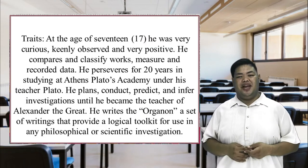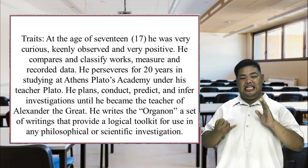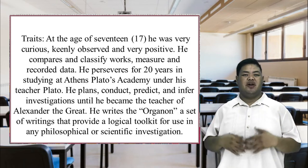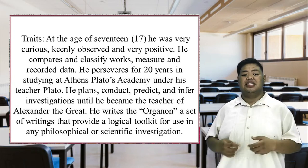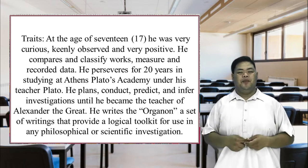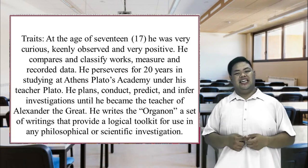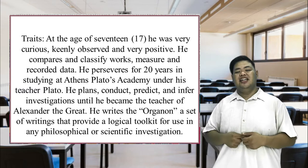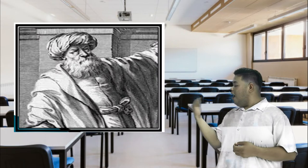Here are some of the good traits of Aristotle. At the age of 17, he was very curious, keenly observed, and very positive. He compares and classifies words, measures and records data. He perseveres for 20 years in studying at Athens Plato's Academy under his teacher Plato. He plans, conducts, predicts, and infers investigations until he became the teacher of Alexander the Great. He writes the Organon, a set of writings that provide a logical toolkit for use in any philosophical or scientific investigation. How about this scientist?